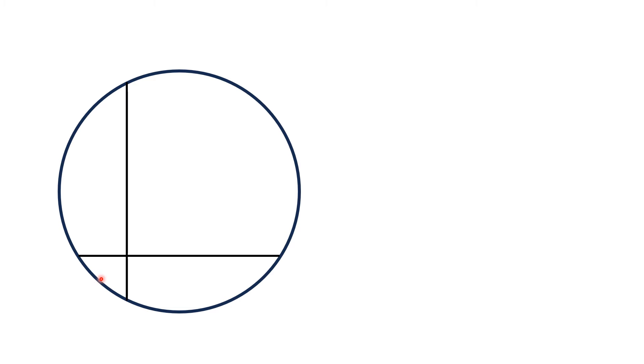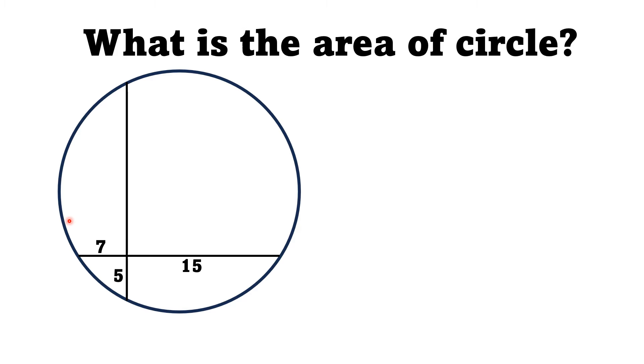The line segments of these chords have lengths of 7 units, 15 units, and this smaller length is equal to 5 units. With this limited data, we have to find the area of this circle.